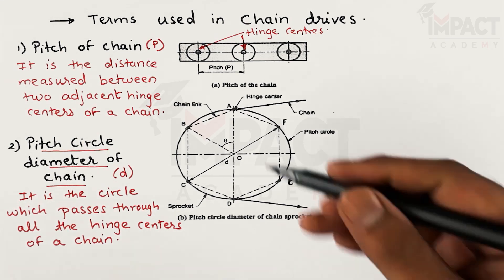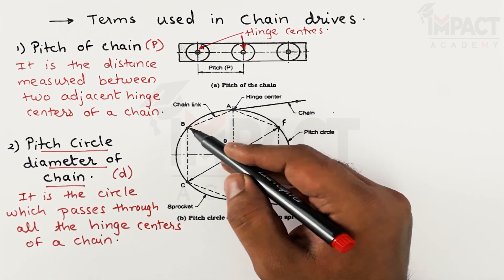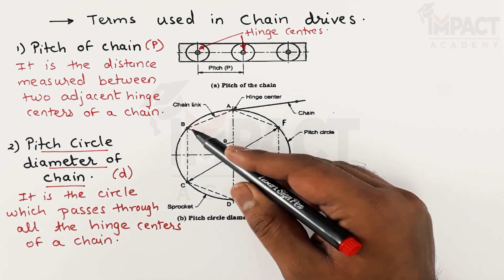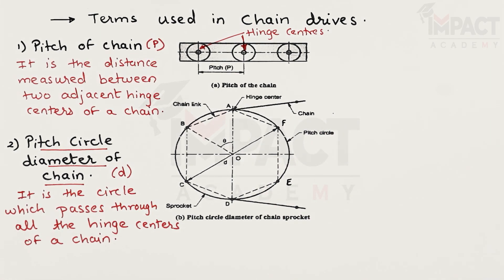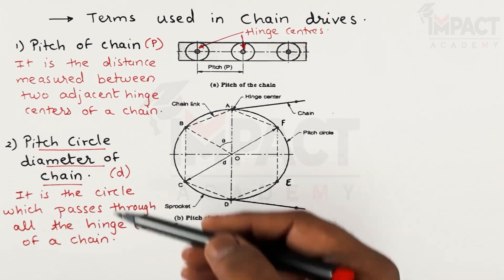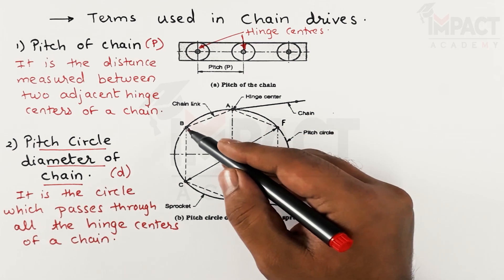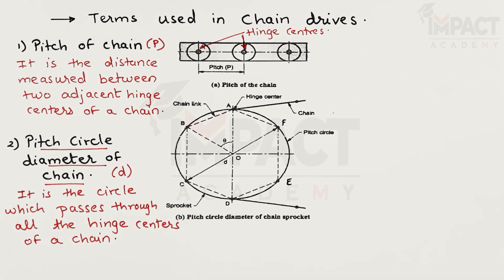From the diagram, point A indicates one hinge center and B is another hinge center, and both are subtending an angle theta at the center of the sprocket. We will now derive the relation between the pitch circle diameter and the pitch of the chain using this figure. We will draw triangle AOB separately to explain this relation, which will be helpful while solving problems in this chapter.